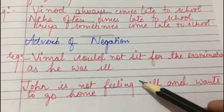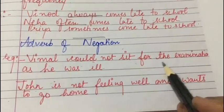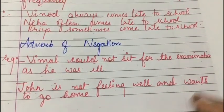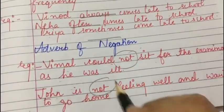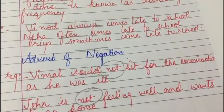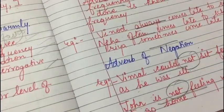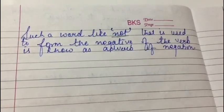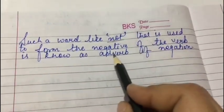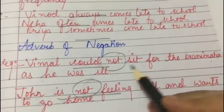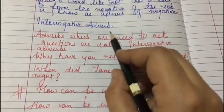Next is adverb of negation. Looking at these two examples: 'Vimal could not sit for the examination as he was ill,' and 'John is not feeling well and wants to go home.' The word 'not' has been used to form the negative of 'could sit' and 'is feeling.' Such a word — like 'not' — that is used to form the negative of a verb is known as adverb of negation.